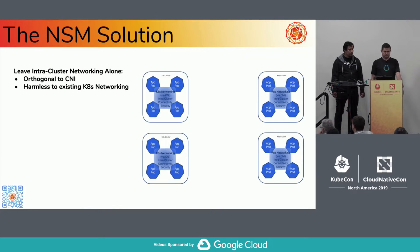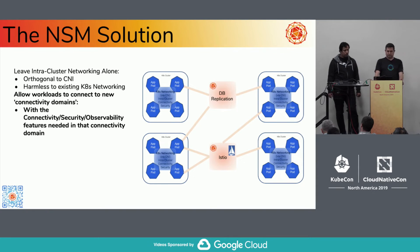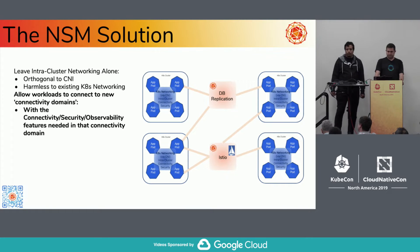NSM provides the solution to this problem. First off, we leave the intra-cluster networking completely alone. We do not have a CNI — we do not touch your CNI. All your Kubernetes networking, we take great care to make sure it continues to function the way you're used to it functioning. We leave that be — we're completely harmless to the existing Kubernetes networking. But we allow you to have connectivity domains in addition to the Kubernetes networking, and your individual workloads can connect to these connectivity domains and pass IP traffic between them, independent of where they're running.